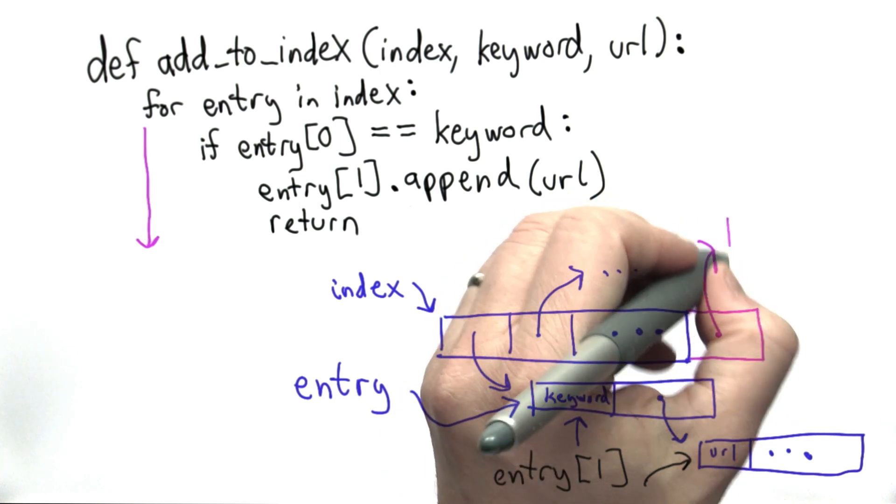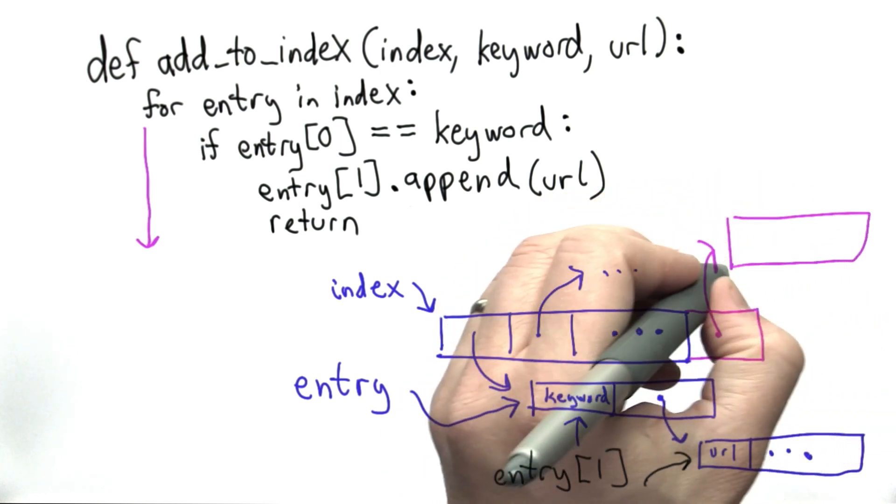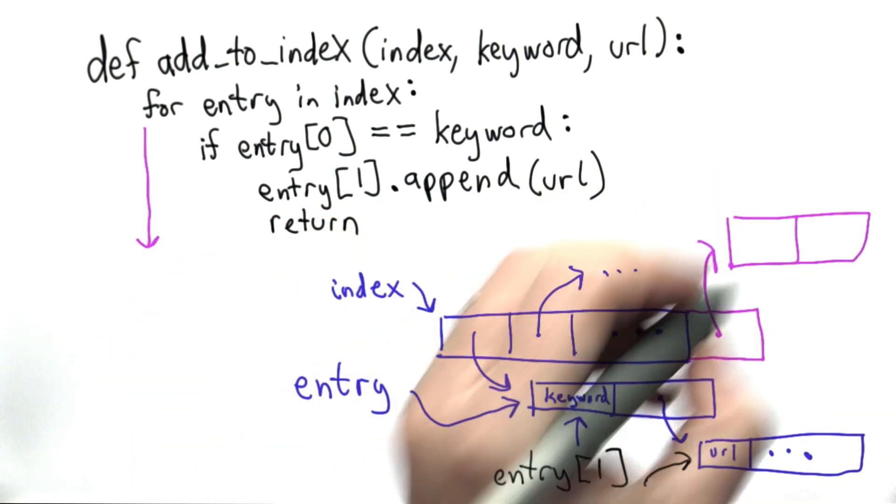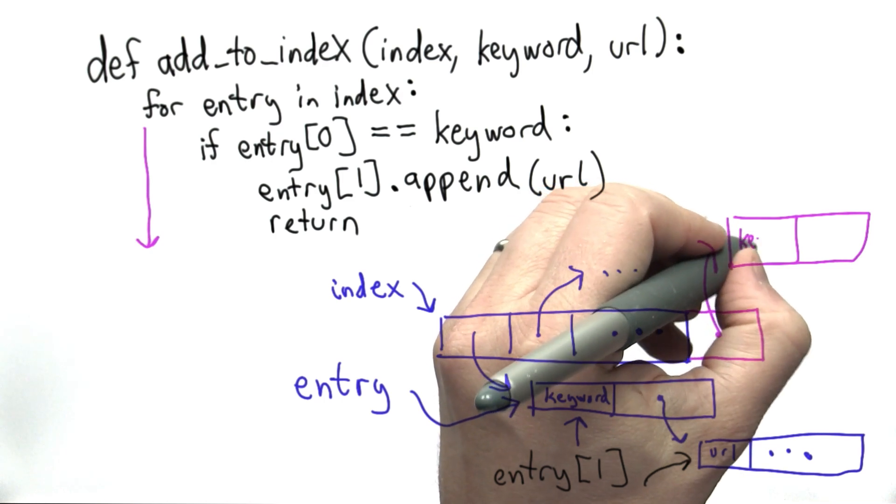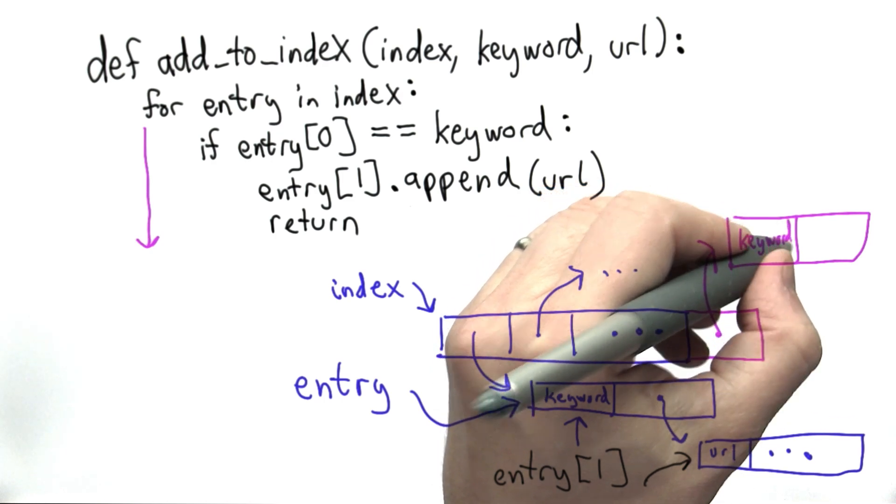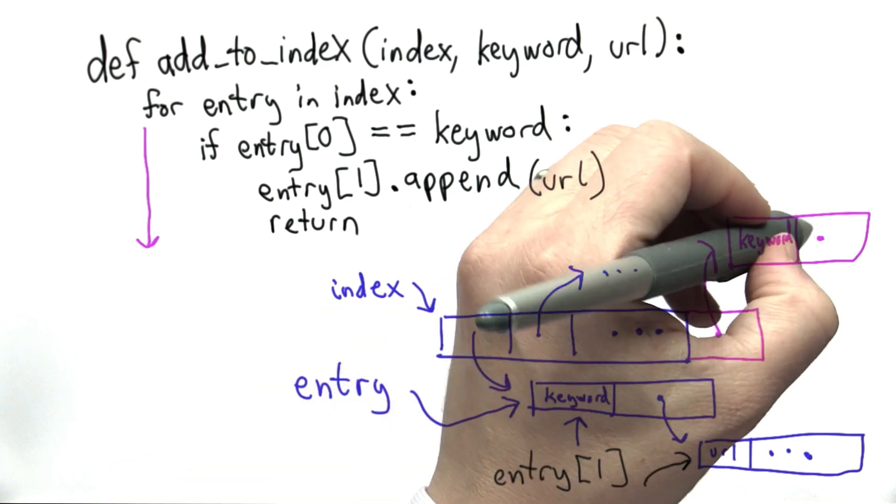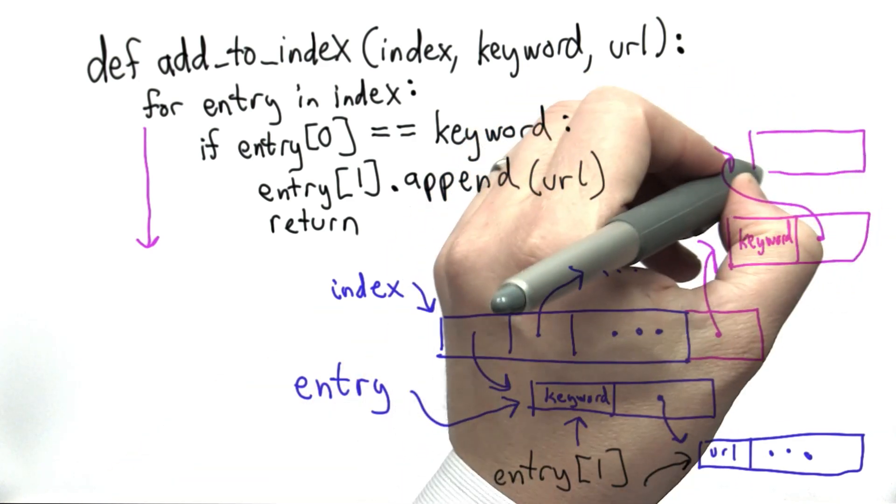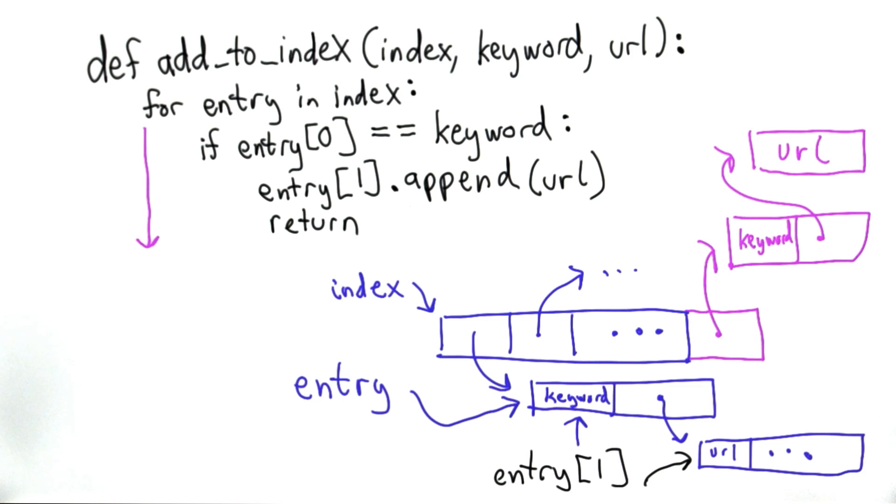And that new entry is going to have as its value a list containing two elements. It will be the keyword, and as the second element, we'll have a list containing the URLs that we found that have that keyword. So far we only have one, the URL that was passed in to addToIndex. So how do we do that?